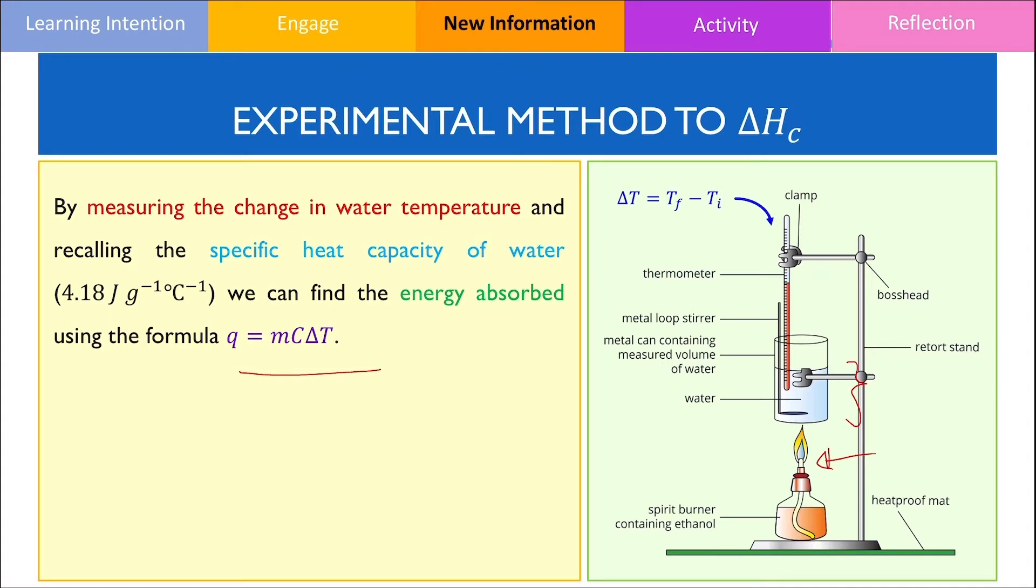As a quick reminder, you would have learnt last year that the specific heat capacity refers to the energy required to raise the temperature of 1g of substance by 1 degree. In the case of water, its specific heat capacity is equal to 4.18.